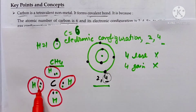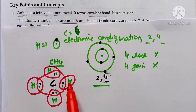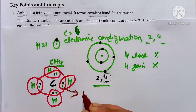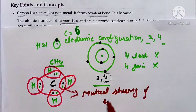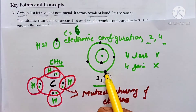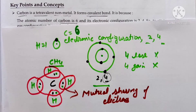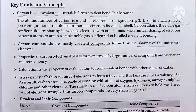Hydrogen atoms share their electrons with carbon — the hydrogen electrons shown in green are shared with carbon. This is called mutual sharing of electrons, which forms a covalent bond. Carbon compounds are mostly covalent and they are formed by the mutual sharing of electrons.